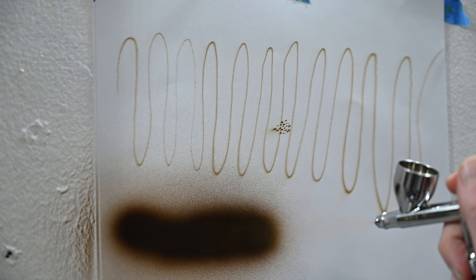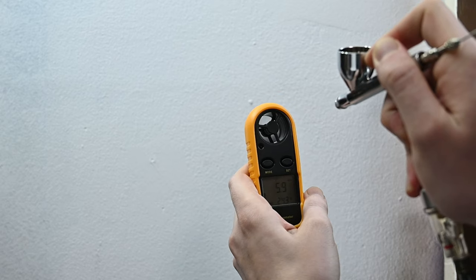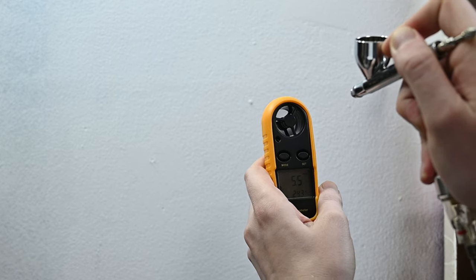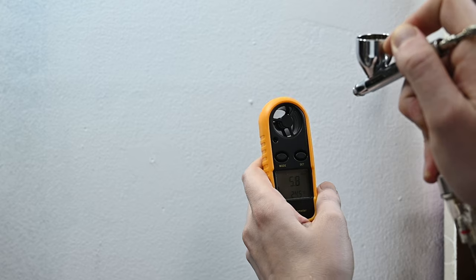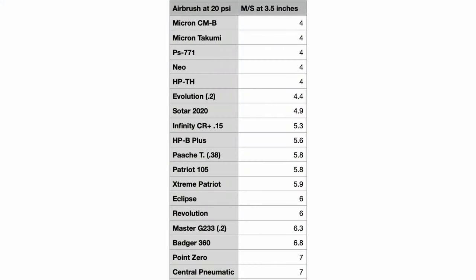And with the needle fully retracted, you can see that this airbrush really puts out a high volume of paint. And checking the airspeed, this one is definitely on the higher side because of that nozzle and head design. I get an airspeed right at around 6 meters per second. From my measurements, this is identical to the Iwata Eclipse, which again is going to make it great for spraying some thicker paints.